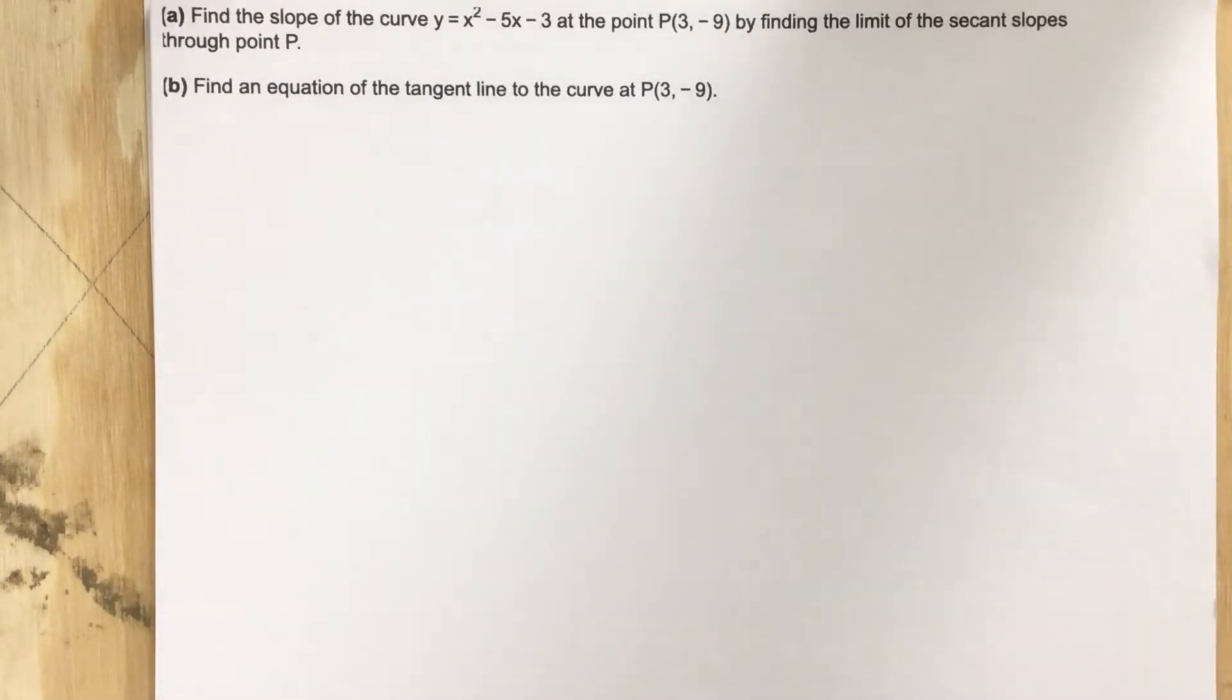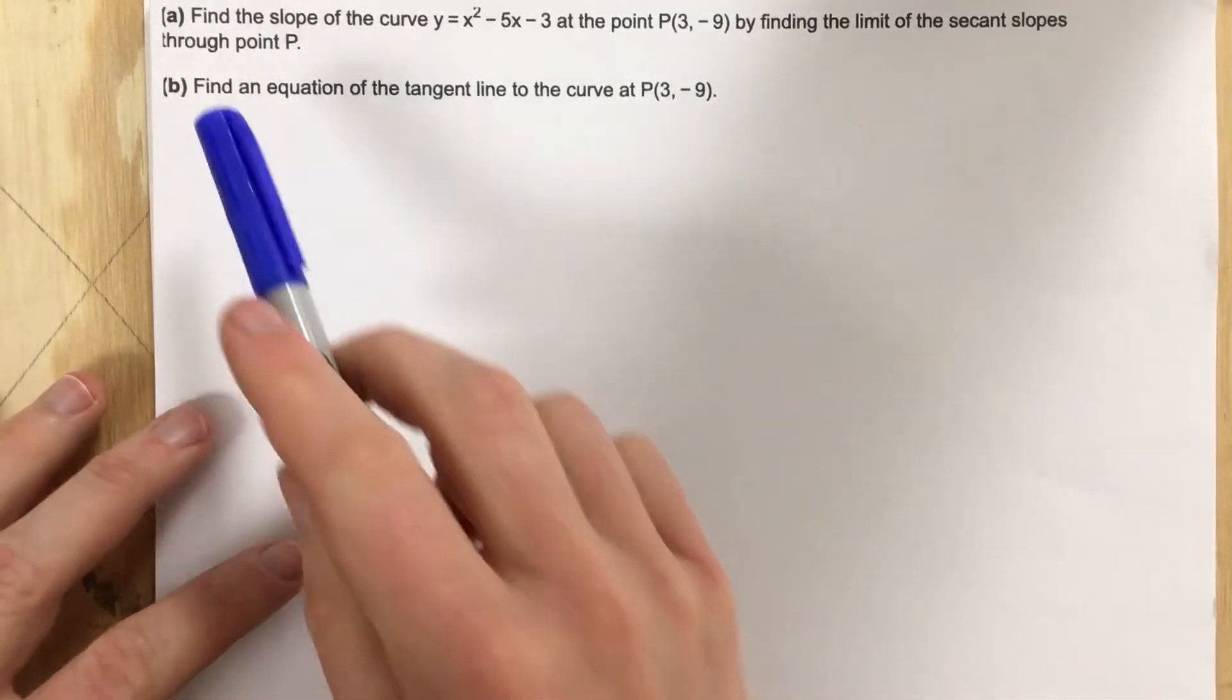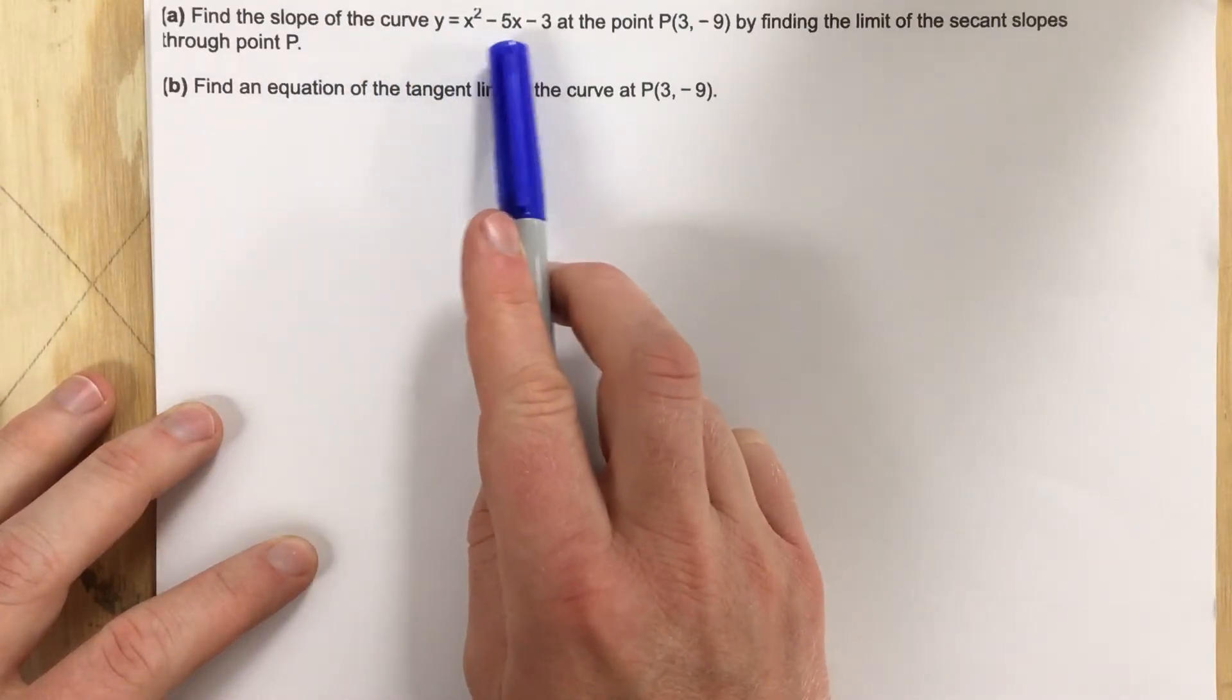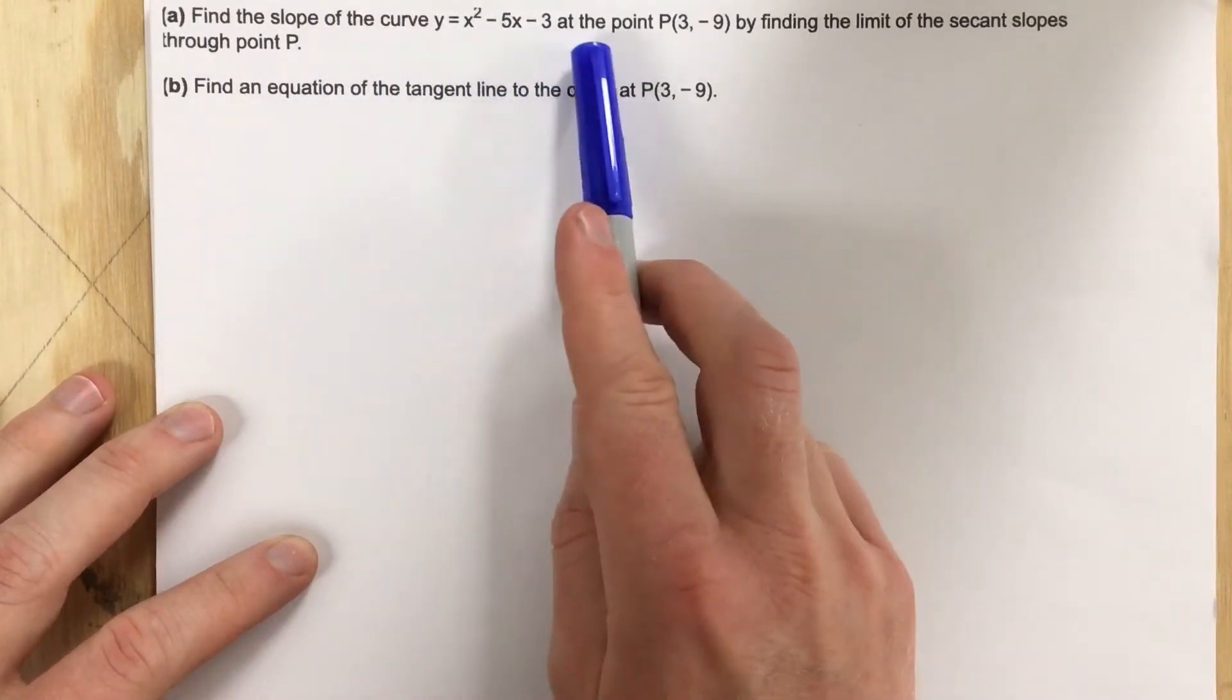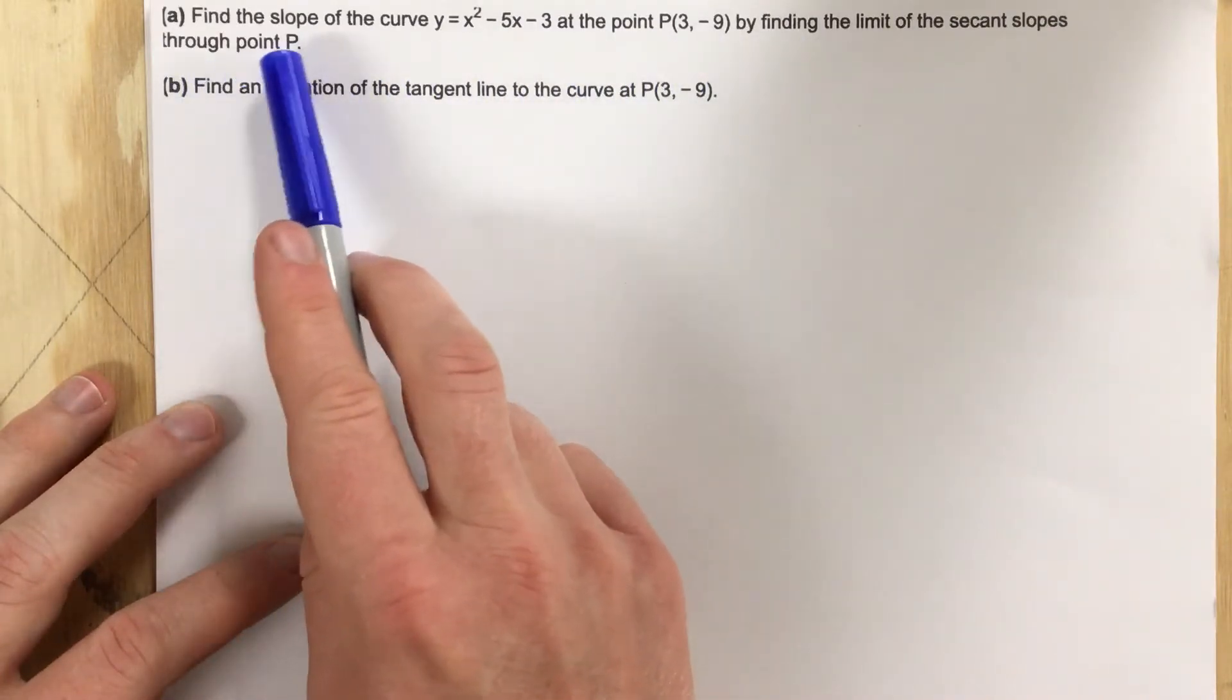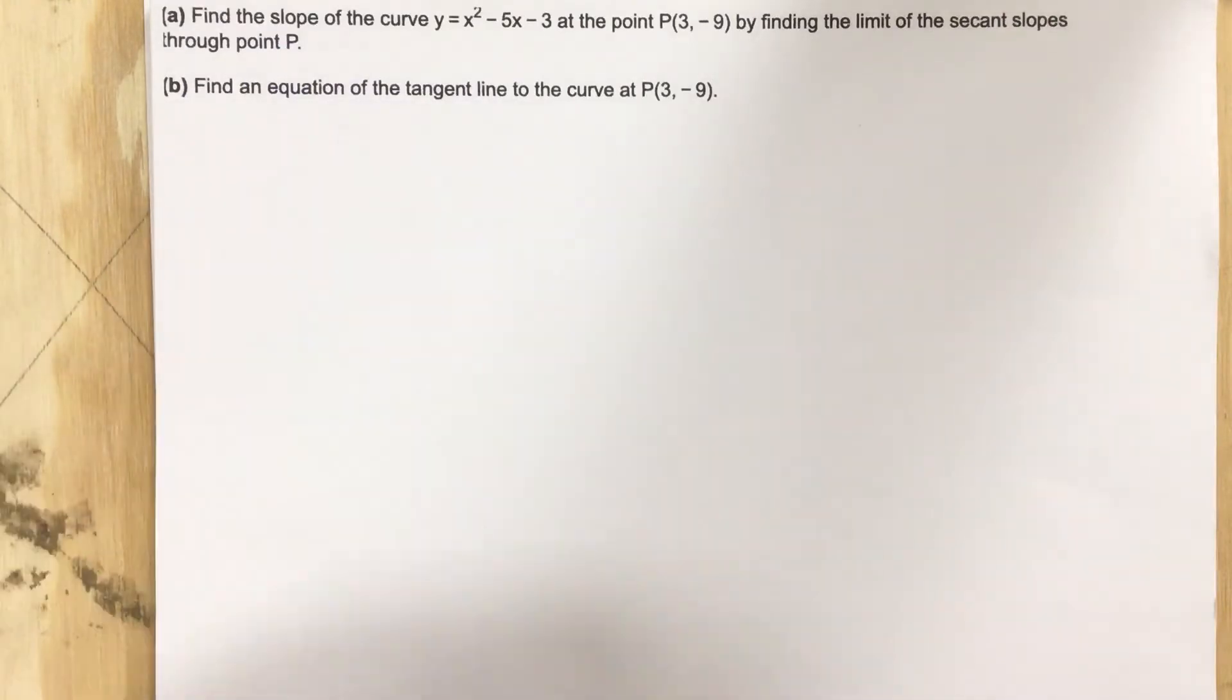This is problem number one for assessment number seven. In this problem it says find the slope of the curve y equals x squared minus 5x minus 3 at the point P(3, -9) by finding the limit of the secant slopes through point P. Find an equation of the tangent line to the curve at point (3, -9).